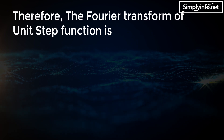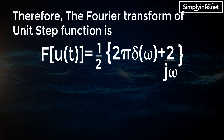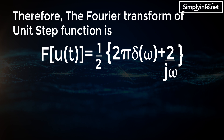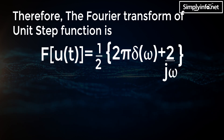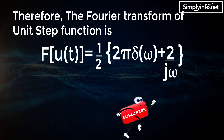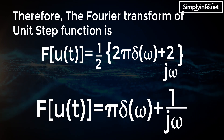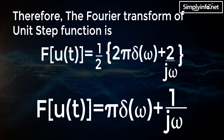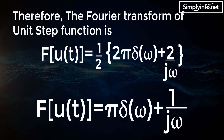Therefore the Fourier transform of the unit step function is F{u(t)} = 1/2 · (2π·δ(ω) + 2/(jω)), which simplifies to F{u(t)} = π·δ(ω) + 1/(jω).